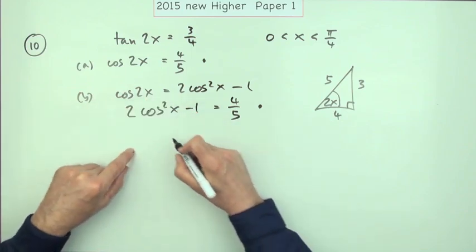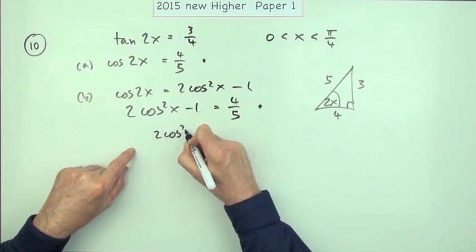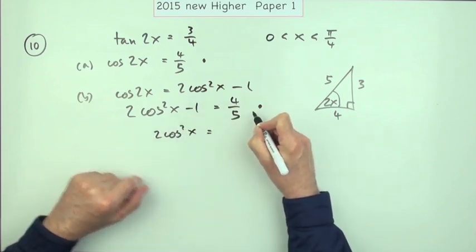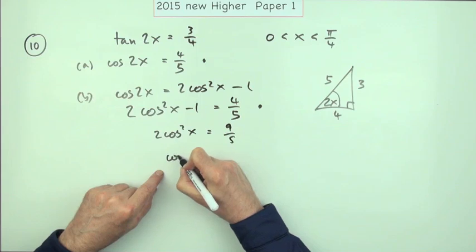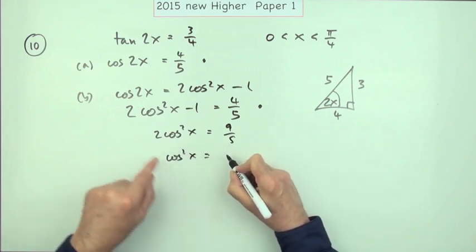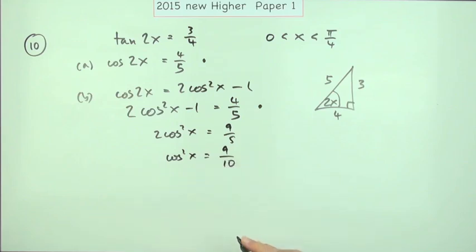So let's get rid of the 1, get rid of the 2, get rid of the squared. So 2 cos squared x will equal that plus 1, which will be 9 upon 5. So cos squared x will be divided by 2, so that'll be 9 upon 10.